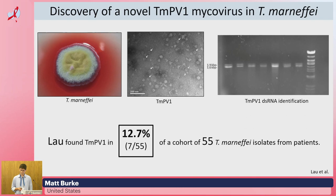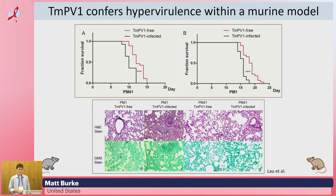So what does TMPV-1 do to TM? Lao showed that TMPV-1 confers hypervirulence within a mouse model, which means increased disease severity. We see shortened survival times as well as higher fungal burden in the organs of mice challenged with mycovirus-infected Talaromyces.